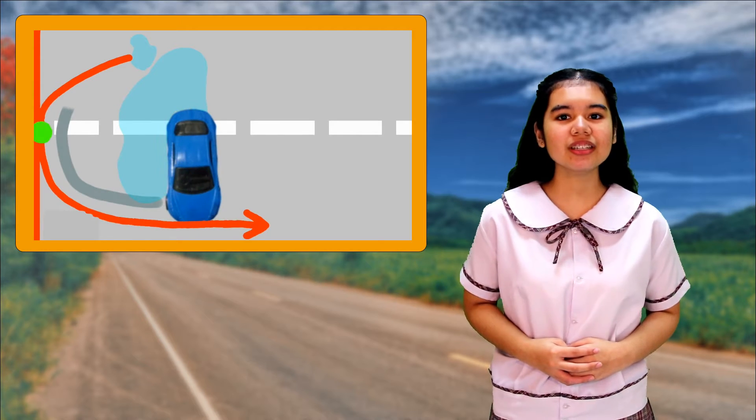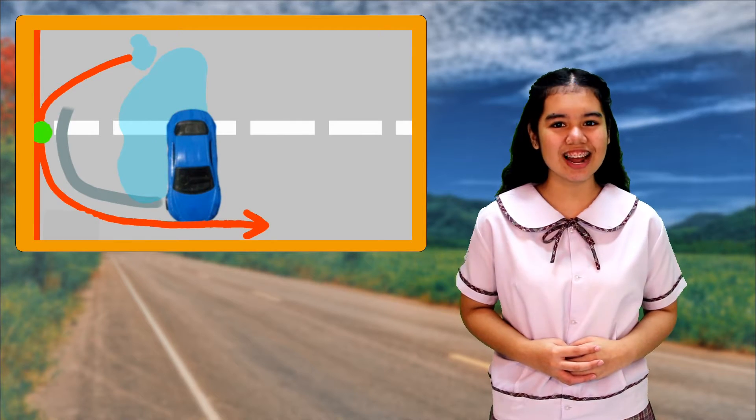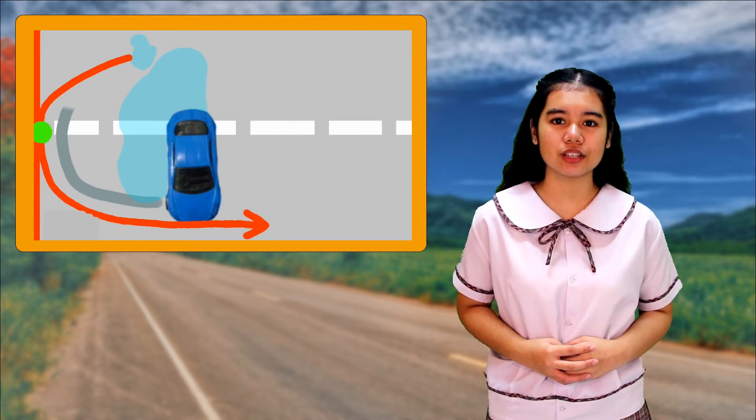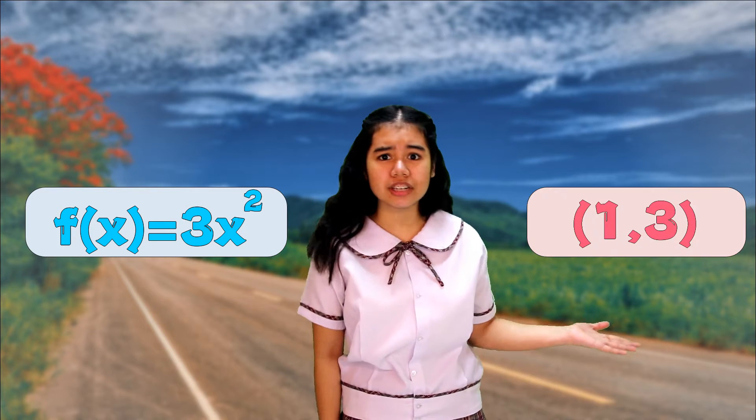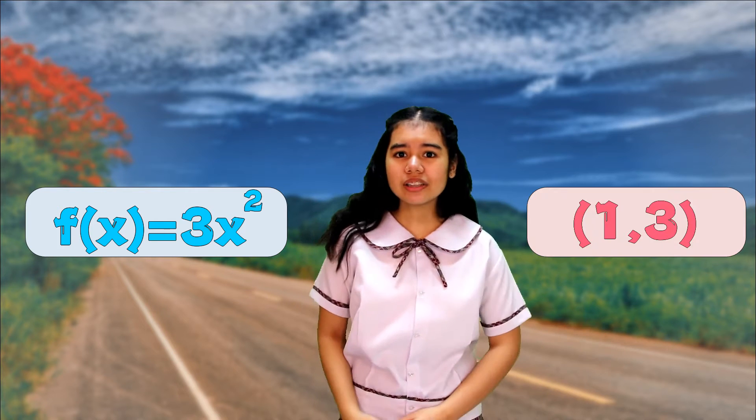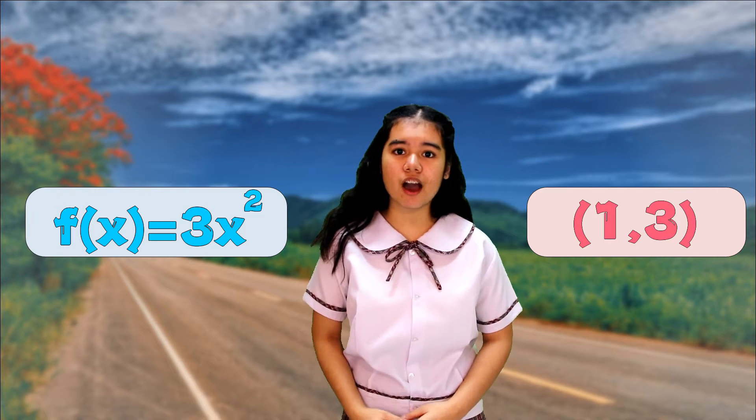it will continue in the direction tangent to the curve. What if the equation of the curve formed by the skidding car is f(x) = 3x² at point (1, 3)? Then what is the equation of the line tangent to that curve?